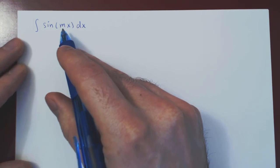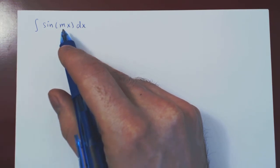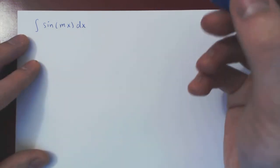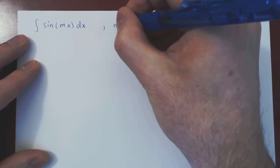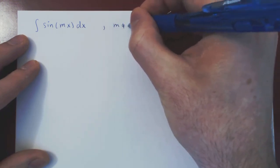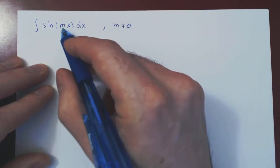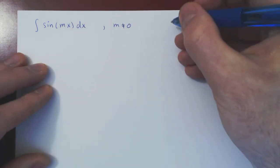So m could be 5, pi over 6 — it doesn't matter. As long as m is non-zero, we can solve this integral with a very simple u-substitution, letting u be simply mx.